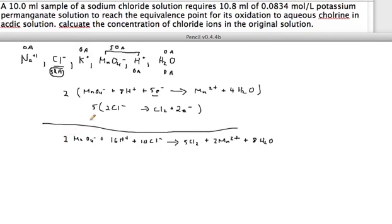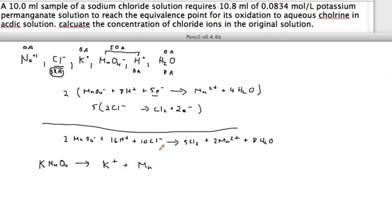Before continuing with the stoichiometry, I'll write the ionization equation for potassium permanganate since we need the mole ratio. KMnO₄ ionizes in water to give K⁺ plus MnO₄⁻, with a 1:1 mole ratio.